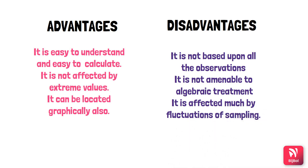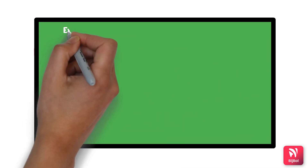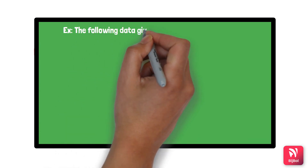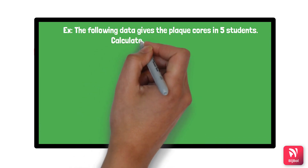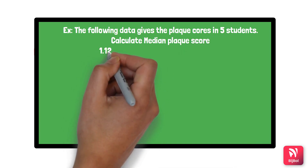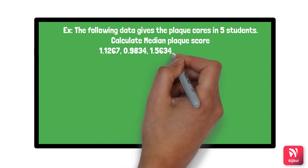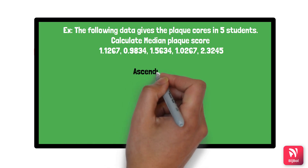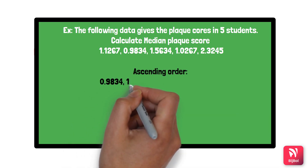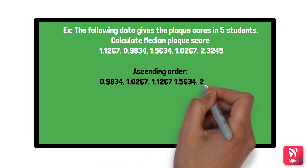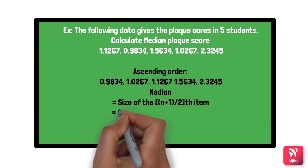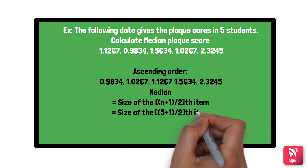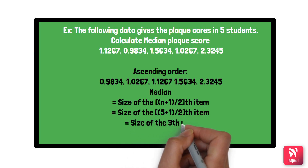Using the same PLAC score example with 5 individuals, arrange the scores in ascending order: 0.9834, 1.0267, 1.1267, 1.5634, and 2.3245. Since the total sample is 5 (an odd number), the median is the (5+1)/2 = 3rd item. The third item is 1.1267, which is the median.